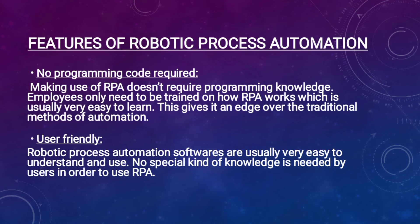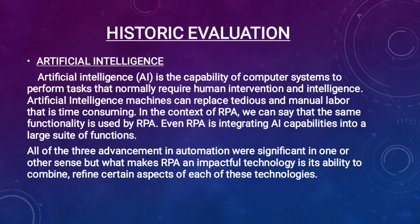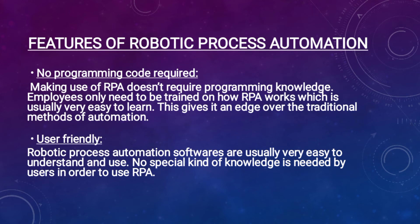Artificial intelligence is the capability of a computer to perform tasks that actually need human intelligence or involvement. AI is nowadays used a lot in the technology field. We can take Sofia the robot as an example, which is completely based on artificial intelligence.